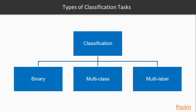The last type of classification task is called multi-label classification, and this is when we assign many categories or many labels to a single observation. For example, if you have a news article, we can use these techniques to assign many categories to it — for example, we can assign simultaneously the labels 'world news', 'international politics', and 'international economics'. So one observation gets many labels.